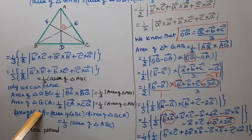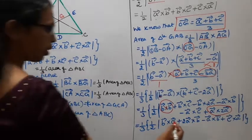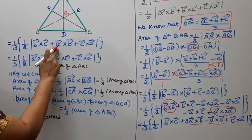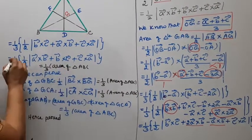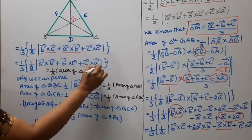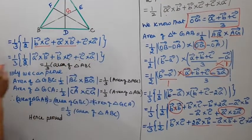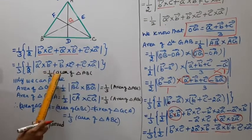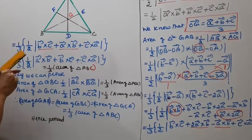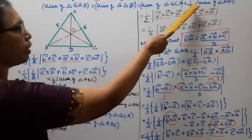So we have one-third times one-half mod of B vector cross C vector, plus 2A cross B vector minus 1A cross B vector equals one-third times one-half mod of A vector cross B vector plus B vector cross C vector plus C vector cross A vector. This equals one-third times area of triangle ABC. Therefore, area of triangle GAB equals one-third area of triangle ABC.